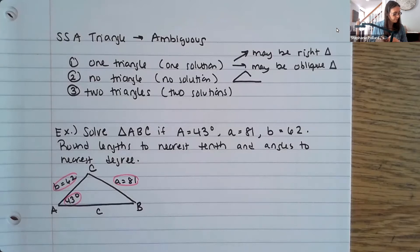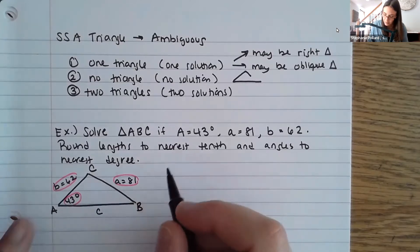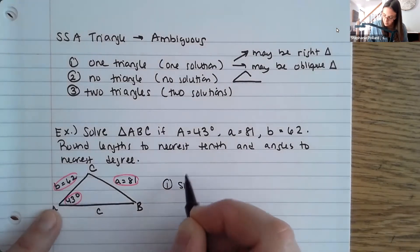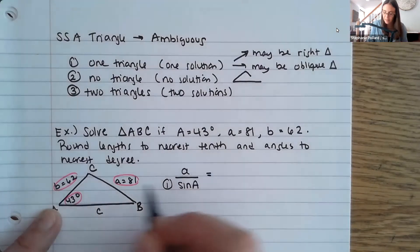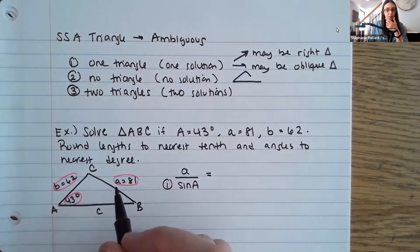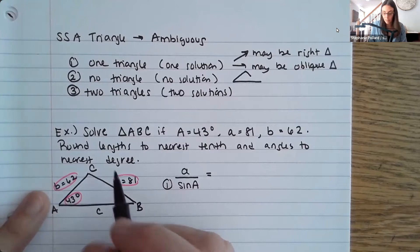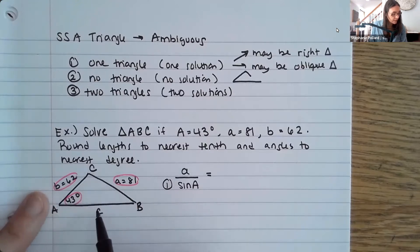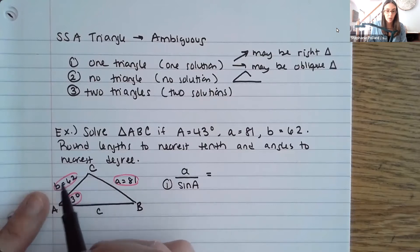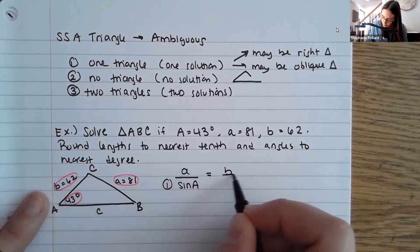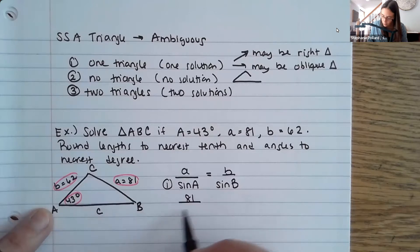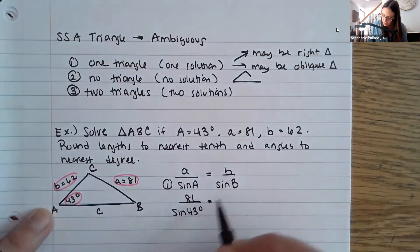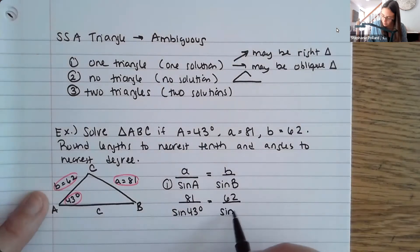Remember when doing the Law of Sines, you need one complete pair. Here I have angle A and the length of a, so this has to be my starting ratio. I'm going to use a over sine A — that's the one piece I know completely. Then I'll bring in my B information, since I don't have any information for C yet. So: 81 over sine of 43 degrees equals 62 over sine of B.